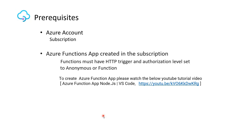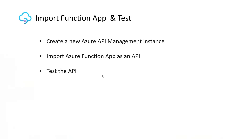The prerequisites for this tutorial are an Azure account with a valid subscription and an Azure Function App created in the subscription, with functions having HTTP triggers and authorization level set to anonymous or function. For the hands-on steps, we will first create a new Azure API Management instance, then import the Azure Function App as an API into that instance, and finally test the API from the Azure portal as well as from the browser.